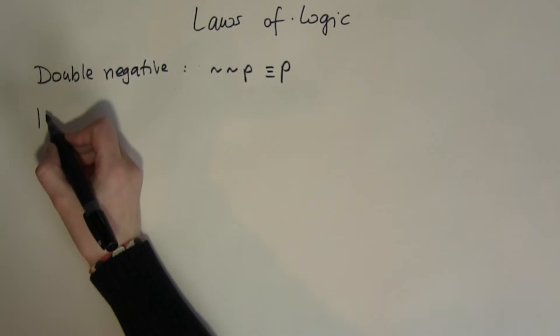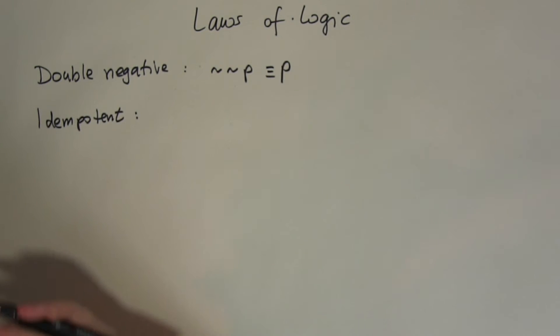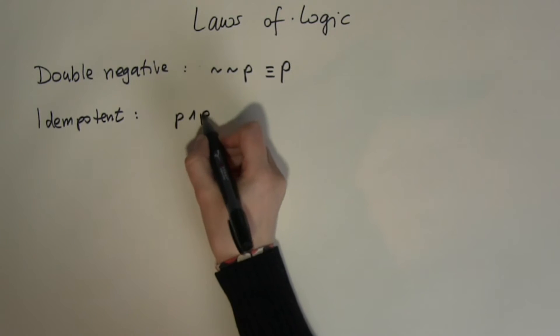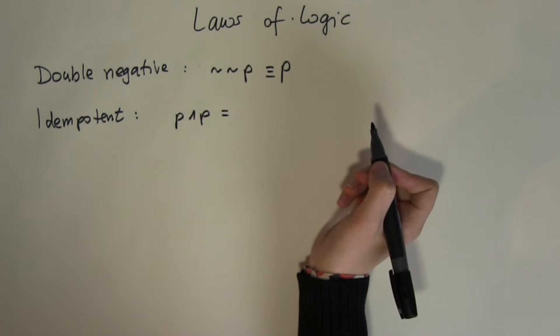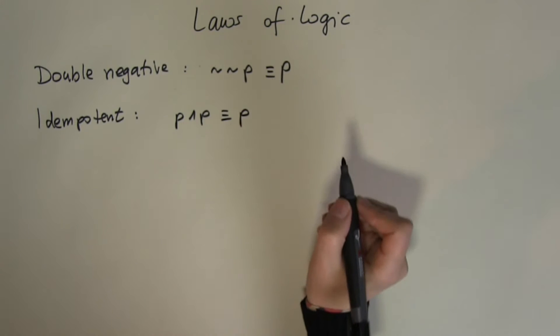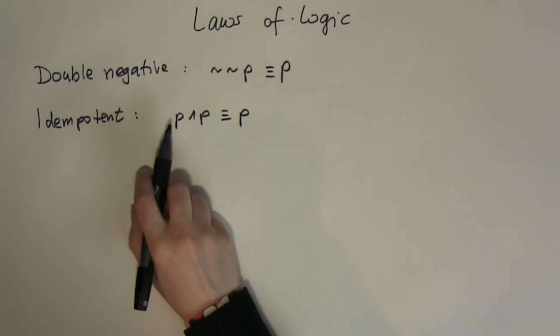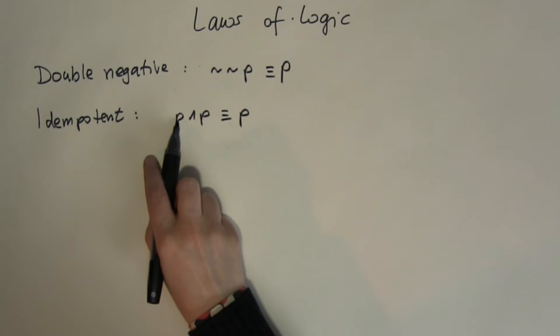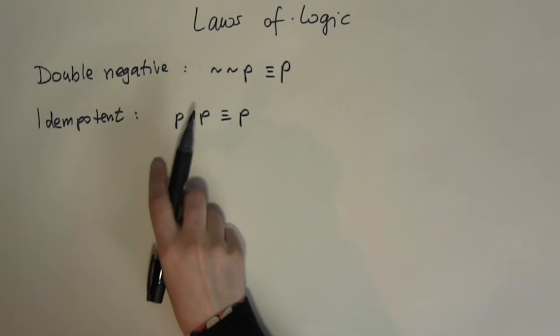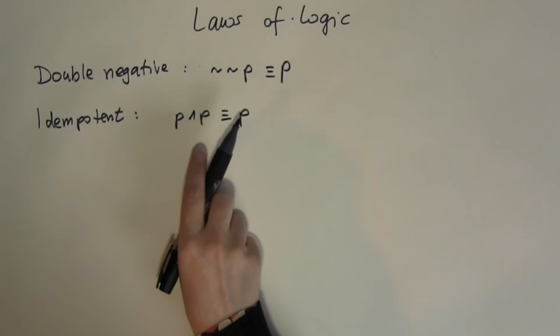Let's look at the next law which we call the idempotent law. This law gives us information about what happens if I apply the operation to the same input. So P and P, what is that going to give me? Well, P and P is always going to give me P. If P is true then true and true gives me true, which is what P was. And if P is false then false and false gives me false, which is again what P was.